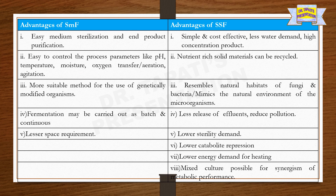There are several advantages in both SMF and SSF processes. The advantages of SMF include easy medium sterilization and end product purification, and easy control of process parameters like medium pH, temperature, moisture, oxygen transfer or aeration, and agitation. SMF is also more suitable for the use of genetically modified organisms. Fermentation may be carried out in batch and continuous mode in SMF, and this process requires lesser space.